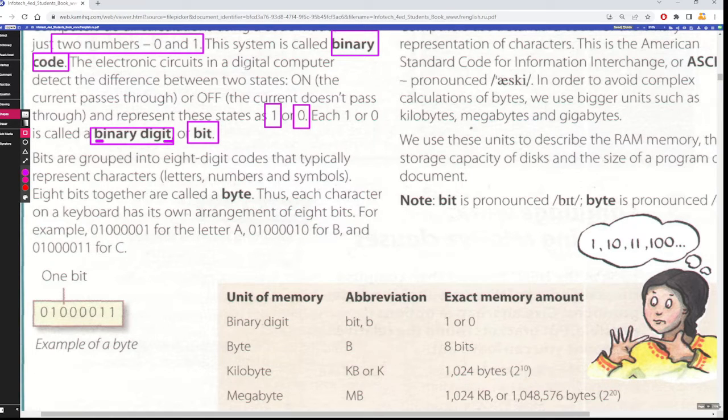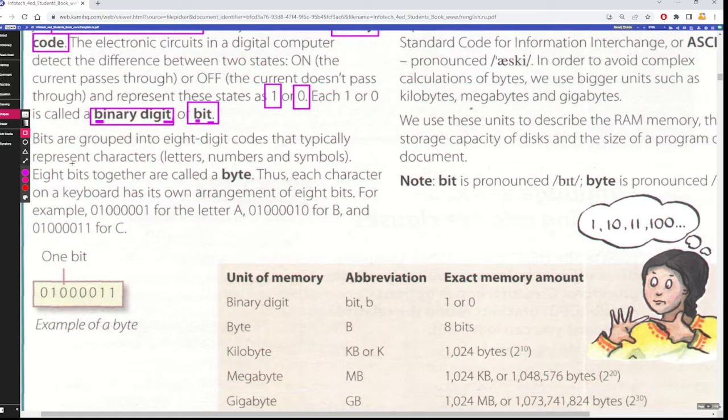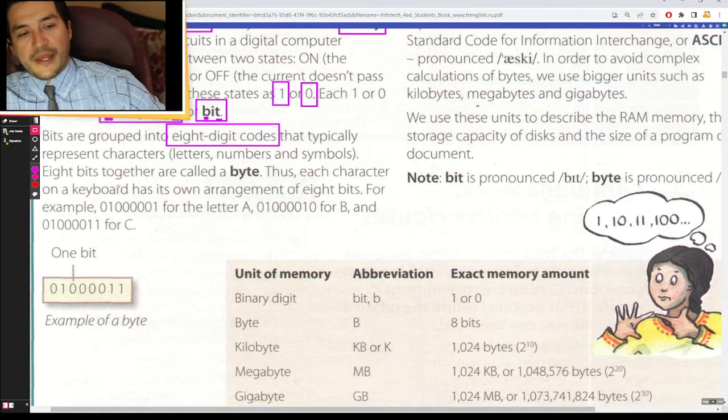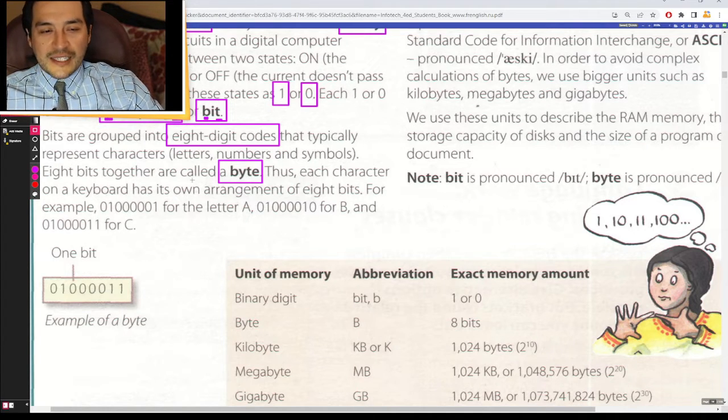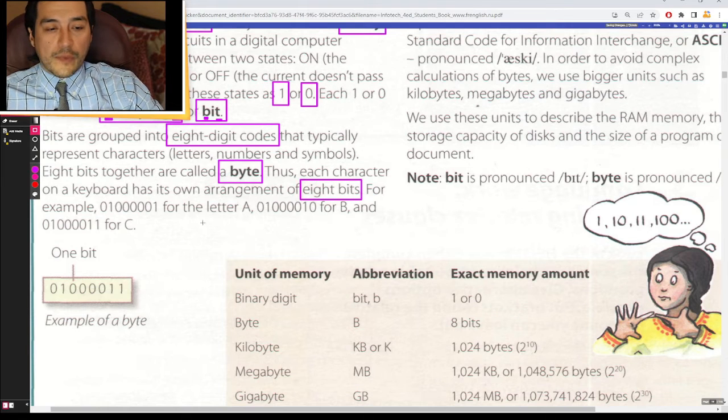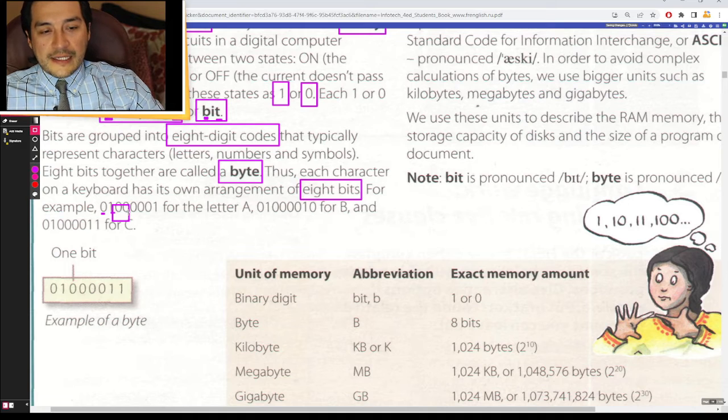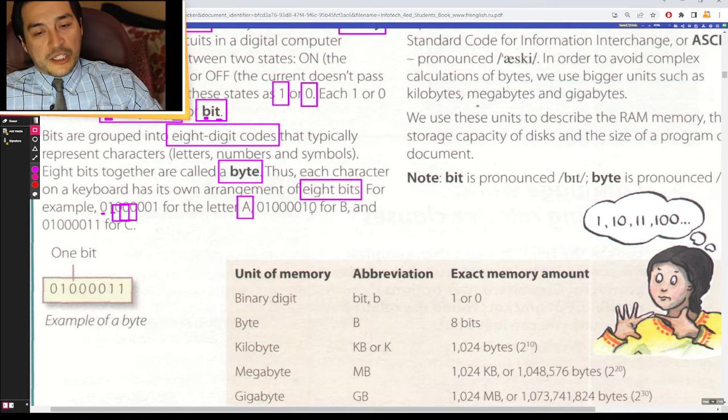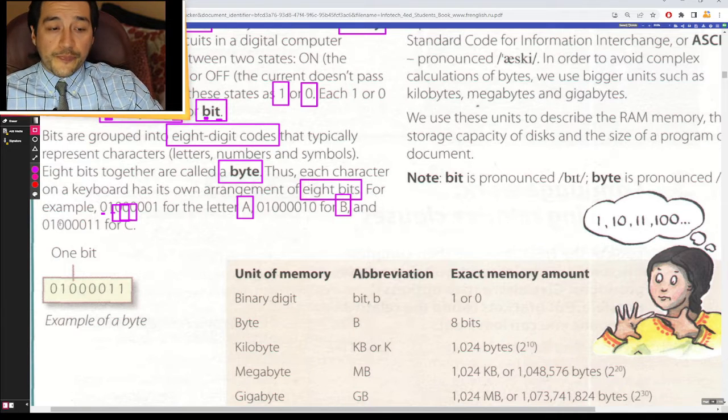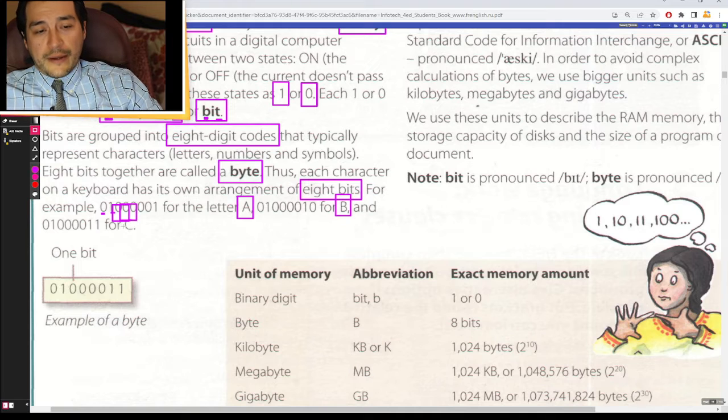Binary digit, bit. Bits are grouped into eight digit codes that typically represent characters, letters, numbers, and symbols. Eight bits together are called a byte. Thus, each character on a keyboard has its own arrangement of eight bits. For example, 01000001 for the letter A, 01000010 for B, and 01000011 for C.